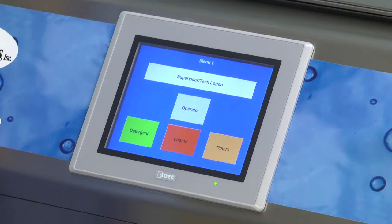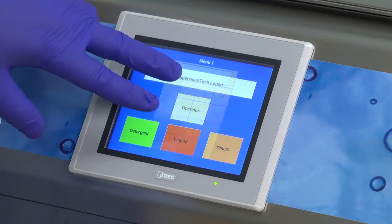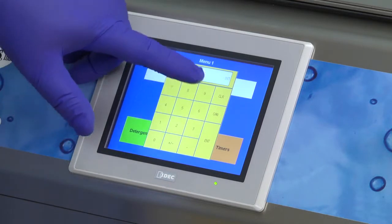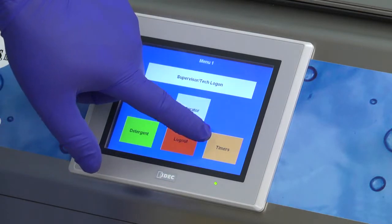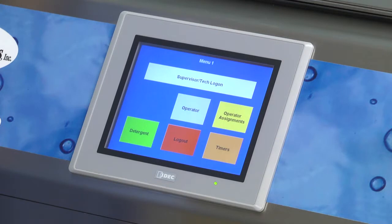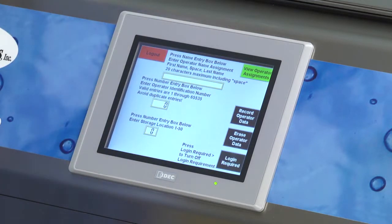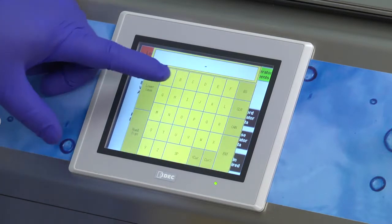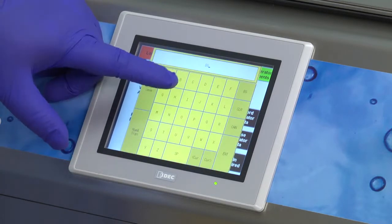To add and remove assigned operators in the system, select the Supervisor Tech button. Enter the code 3179 and press Enter to access this menu. To view a list of operators and their login information, press the Operator Assignments button. Up to 50 operators can be assigned logins for each machine. To create or delete an operator login, press the Name Entry box and type their name using the keypad, then select Enter.